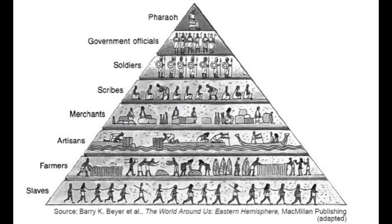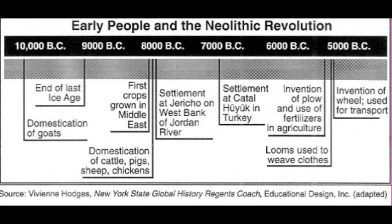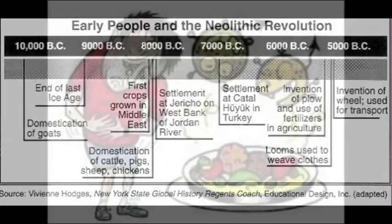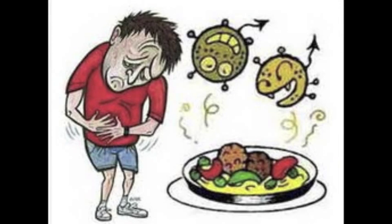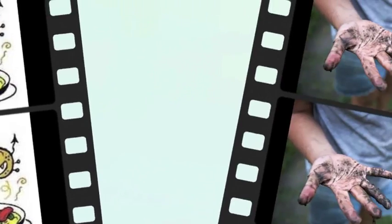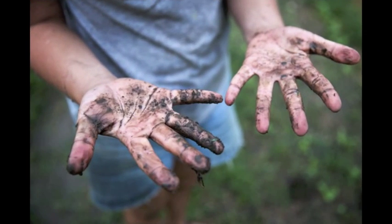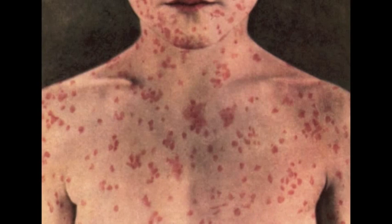While the Neolithic Revolution created many positive outcomes, it also caused many negative effects. It created foodborne illnesses. Many people lacked good sanitary practices, so diseases were very easy to spread. Also, because animals were domesticated, more sicknesses spread from animals to humans. These diseases include influenza, smallpox, and measles.